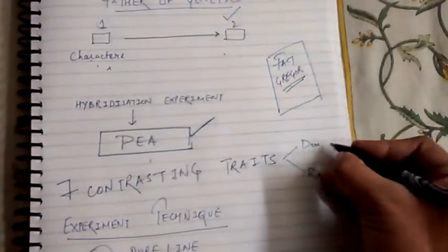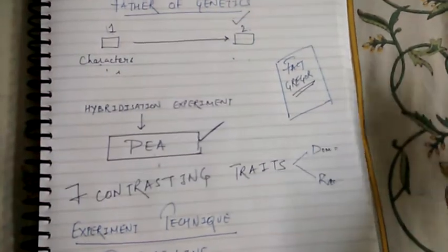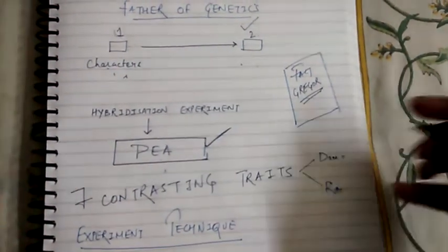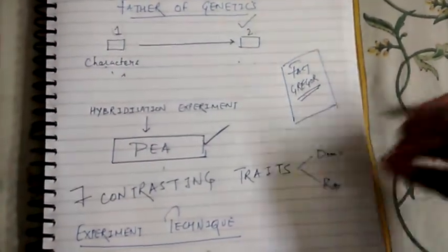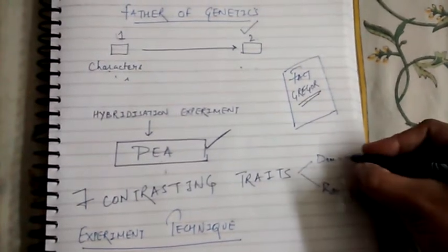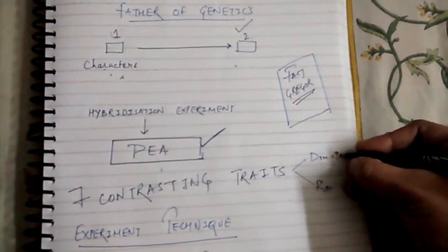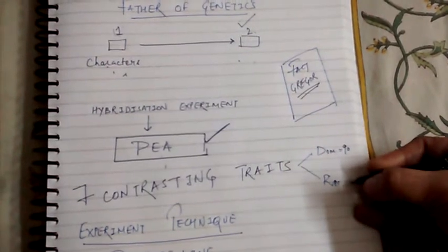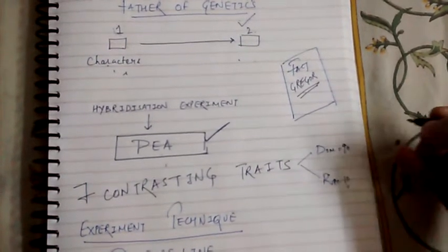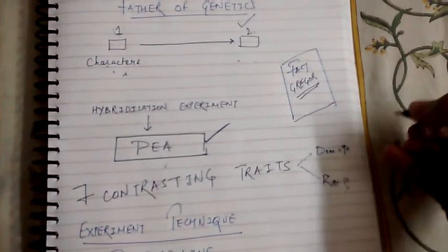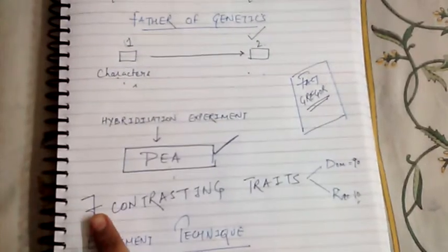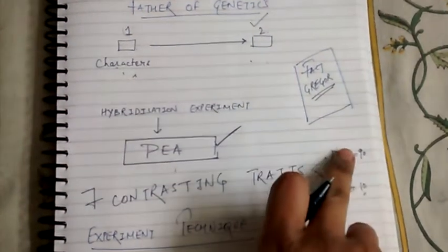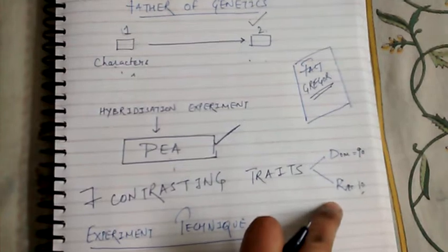Dominant traits are those which are found in most samples — let's say if we are taking 100 samples, dominant traits are those found in 90 of them, and recessive are those found in only 10. So he found 7 contrasting traits and divided them into dominant traits and recessive traits.